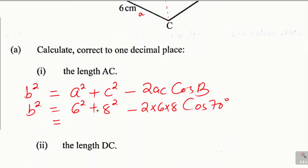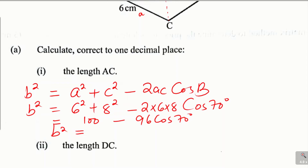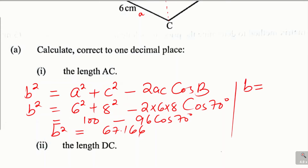Simplifying: b squared equals 36 plus 64, which is 100, subtract 96 times cosine of 70 degrees. Using the calculator, 100 minus 96 cos 70° gives 67.166. Taking the square root of both sides, b equals the square root of 67.166.